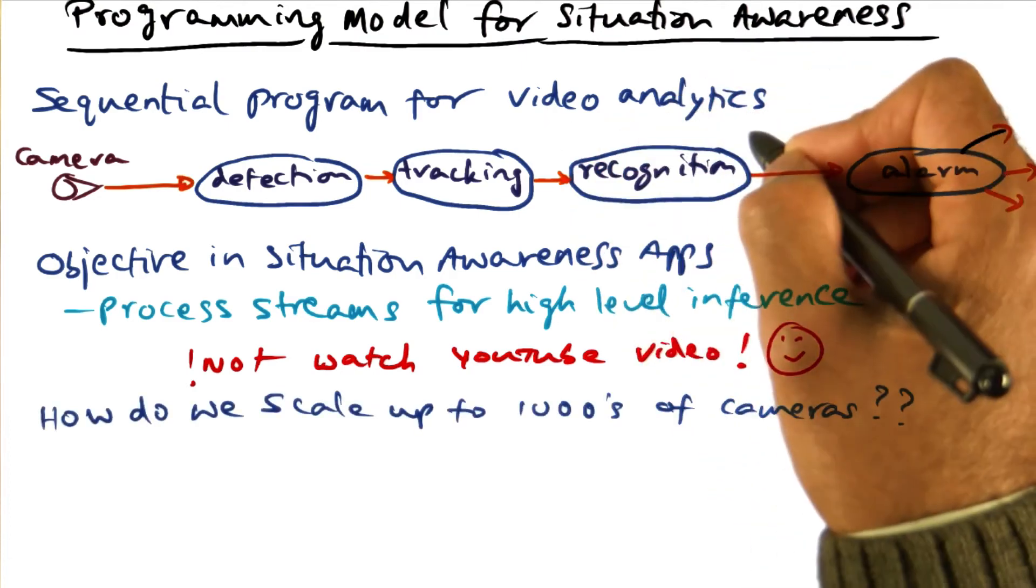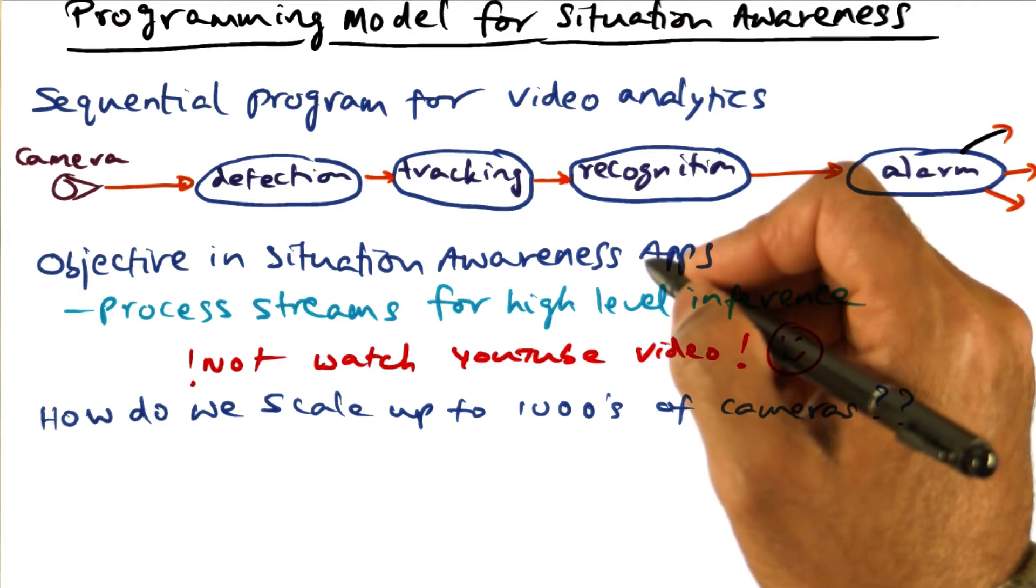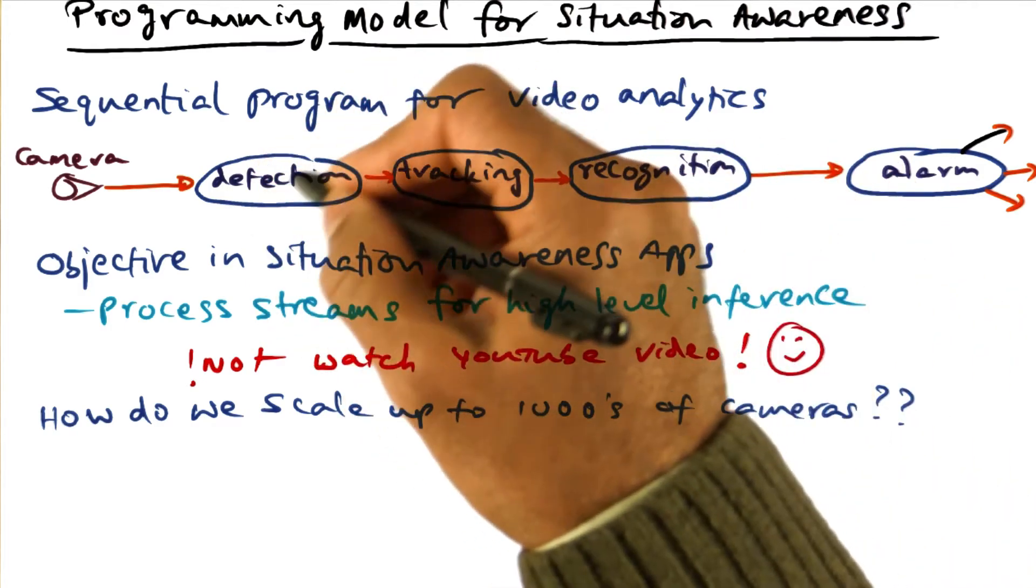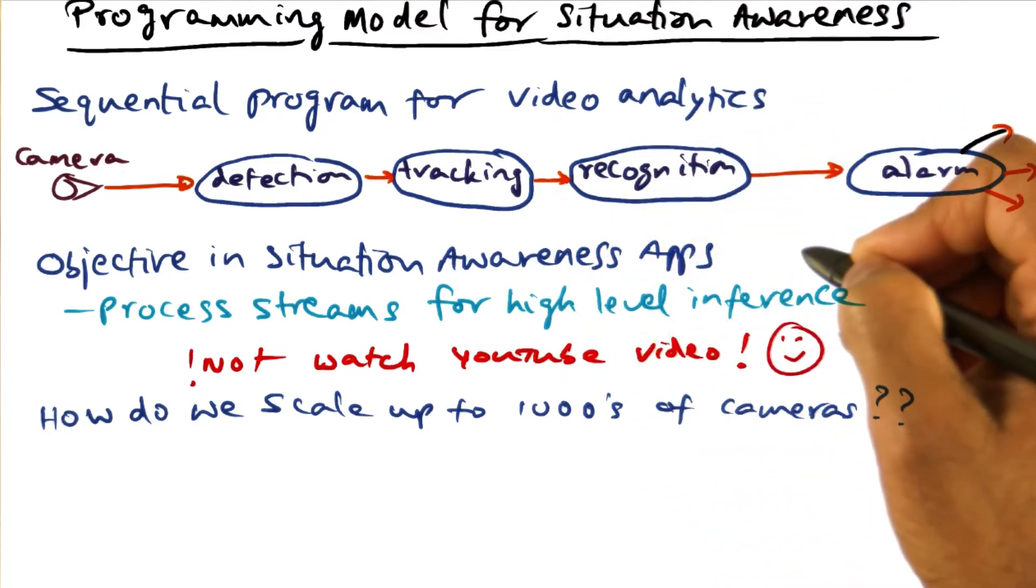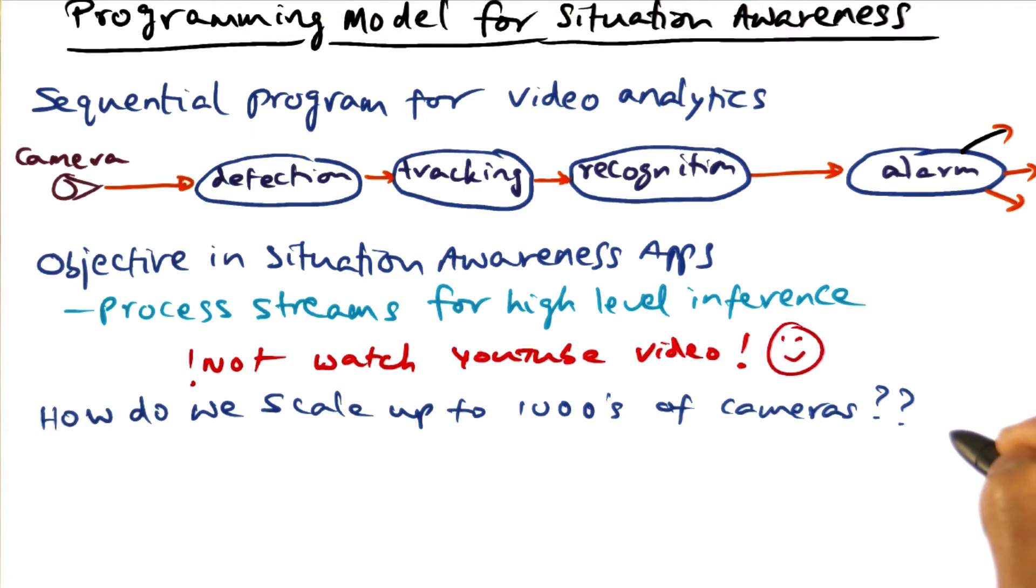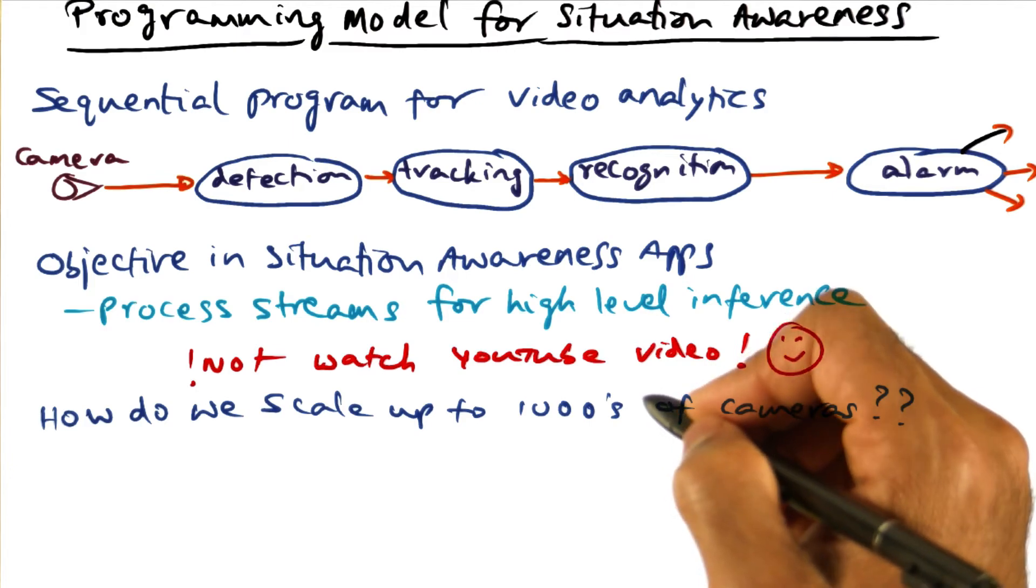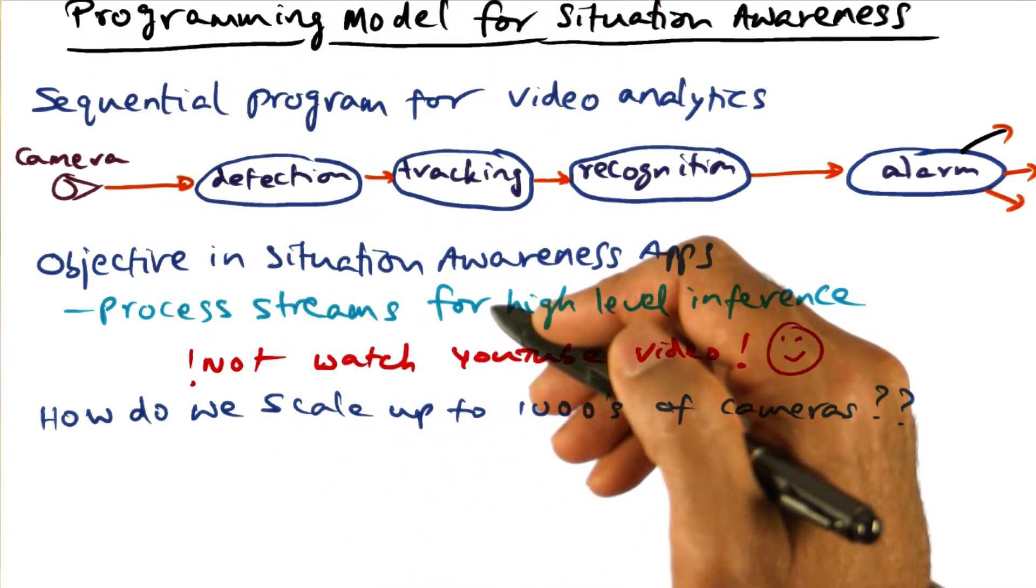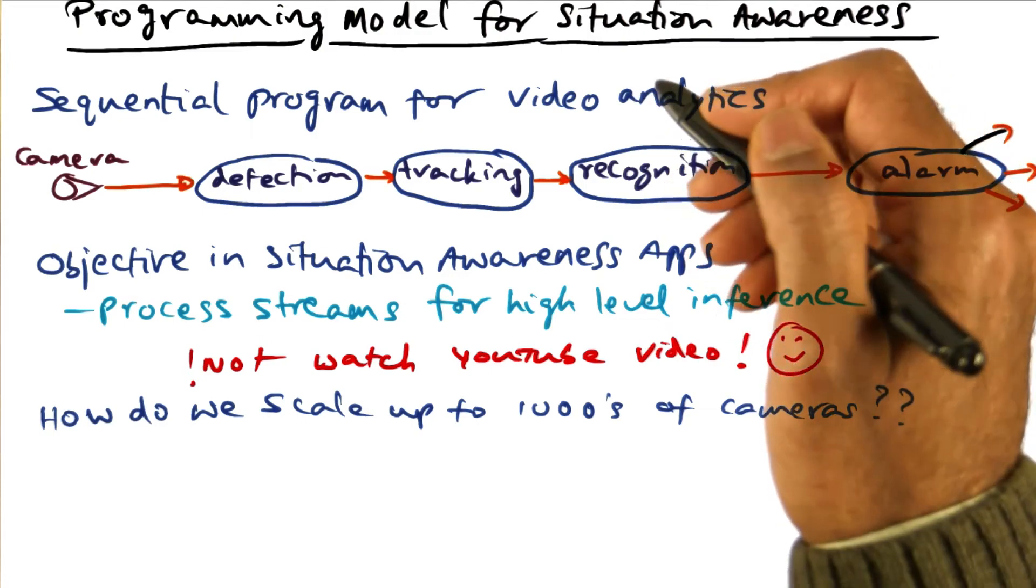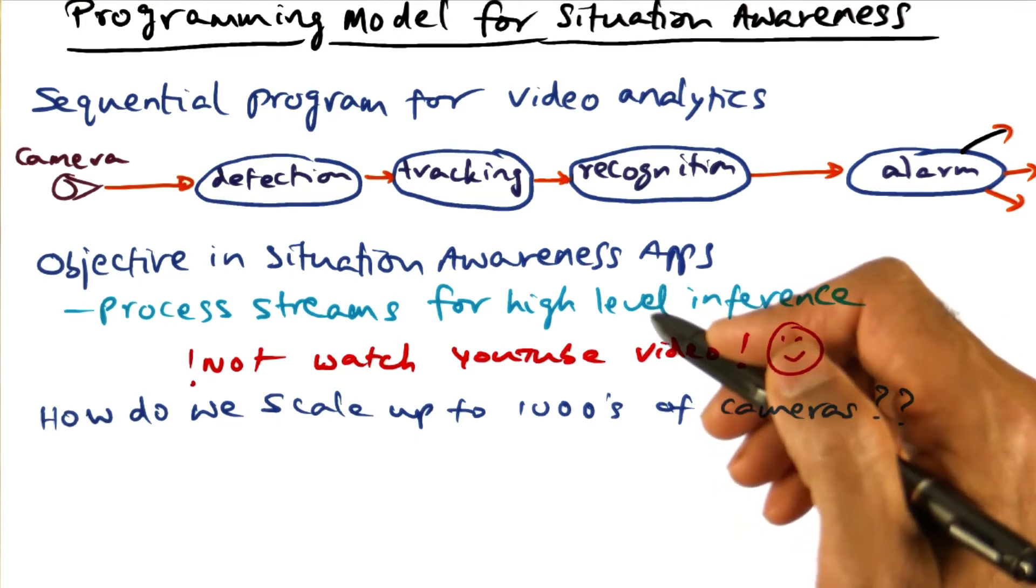As I mentioned, video analytics is in the purview of a domain expert like a vision researcher or a developer who knows how to write sophisticated detection, tracking, and recognition algorithms. But how do we scale that up to thousands of cameras? If an object is moving from one camera to another, these are the kinds of things that the domain expert for situation awareness may have to worry about. This is where systems can come in with programming models that alleviate the pain points of a domain expert developing situation awareness applications.